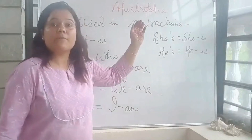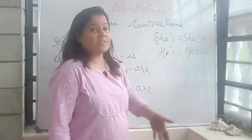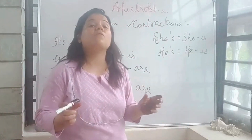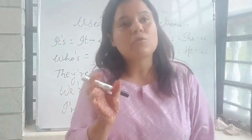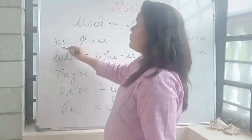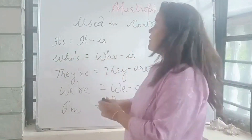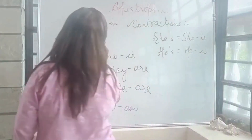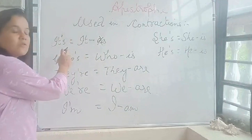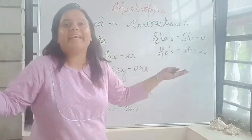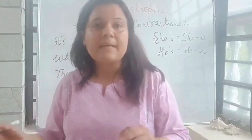Another important use of the apostrophe is that it is used in contractions. Contractions means when we shorten words — we call it a contraction. For example, 'it is' becomes 'it's' — we cut the 'i' from 'is' and the apostrophe comes in its place. It's a lovely day — instead of 'it is a lovely day', we can write 'it's a lovely day'.